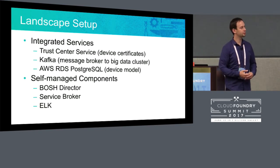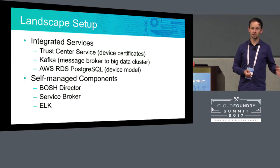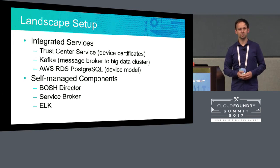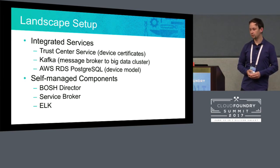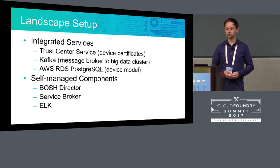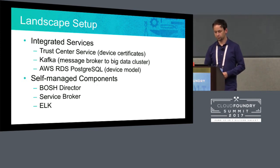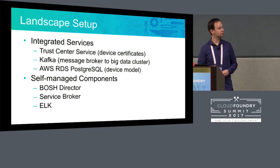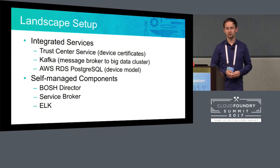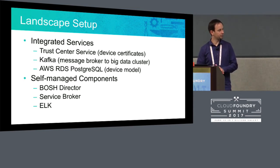We are also integrating with certain services. For security — whenever we connect a device to the cloud, we need authentication. We use certificates and a trust center service from SAP to get device certificates for secure communication. There's a Kafka broker in between to make data available in big data storage for applications. We use AWS RDS to store metadata for the device model. Unfortunately we also have to manage some components ourselves, like the BOSH director, service broker, and ELK stack, leveraging platform services from SAP Cloud Platform — but these are challenging things we have to manage.